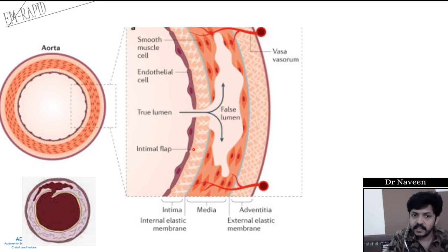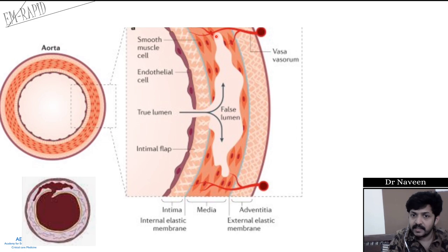Looking at the cross-section of the aorta: blood flows through the lumen, and if there is a break in the tunica intima — the internal elastic membrane — blood will naturally dissect between the tunica intima and the tunica adventitia in the tunica media area, creating a false lumen. This is called aortic dissection.